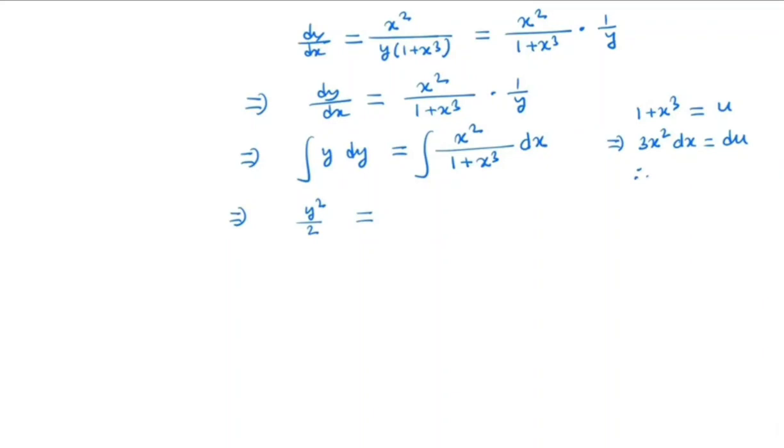So we have x² dx = du/3. So here we have x² dx = du/3 and 1+x³ = u.